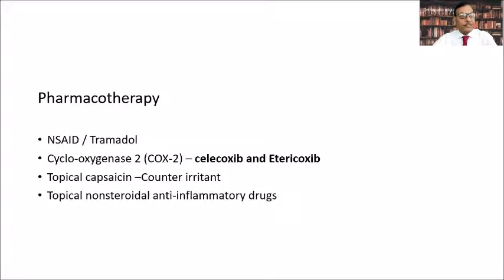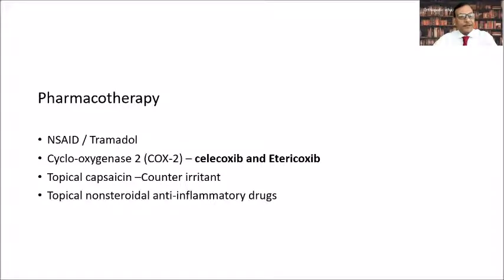Medications can be given especially in the form of painkillers. Since there is some inflammation present, many advocate using NSAIDs initially for a few days or a week, then switching to pure analgesics. The cyclooxygenase-2 (COX-2) inhibitors are the best option for NSAIDs — celecoxib and etoricoxib are best suited. Topical capsaicin can be given as a counter-irritant, and sometimes topical NSAIDs can be given.